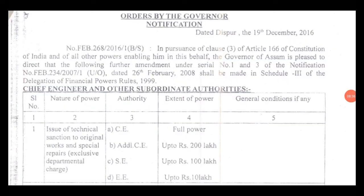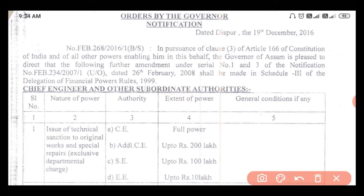एक example के तौर पे Government of Assam का एक notification है जिसमें technical sanction करने के power limits दिए गए हैं। यहाँ देखिए — nature of power में: issue of technical sanction to original work and special repair and exclusive departmental charges। Authority में first है chief engineer — उसके पास full powers हैं।